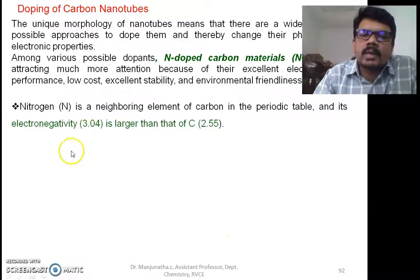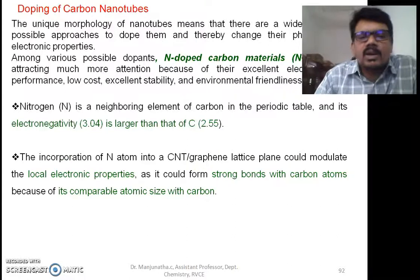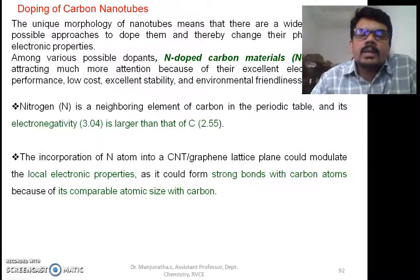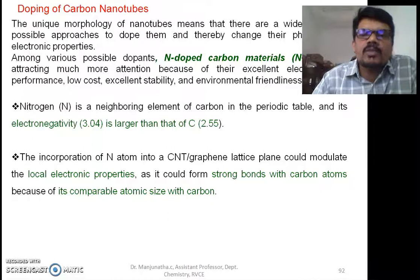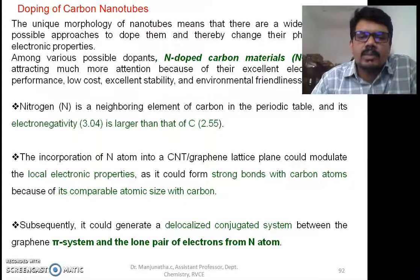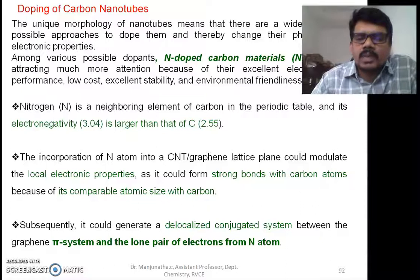Nitrogen is a neighboring element of carbon in the periodic table. Nitrogen is more electronegative than carbon, with electronegativity of 3.04 compared to carbon's 2.55. The size is almost the same, hence we can easily incorporate nitrogen atoms in a graphene or CNT lattice. This could modulate the local electronic properties as it forms strong bonds with carbon atoms due to comparable size. Nitrogen has three valency, so it can form only three bonds.